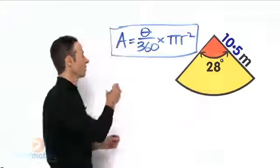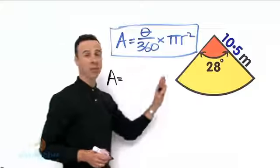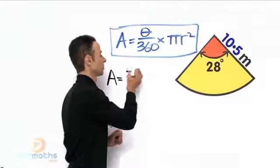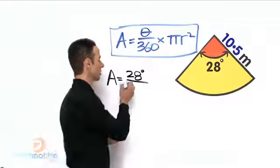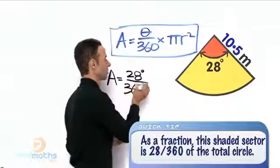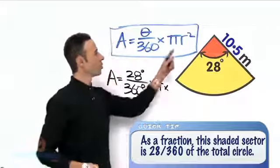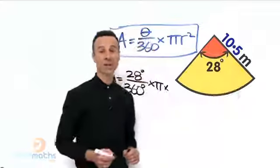So area of the whole shaded region is theta, which is the angle component. The angle component we have is 28 degrees all over the full component which is 360, times pi times the radius which is 10.5, given here as 10.5 meters. That is pretty big.